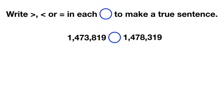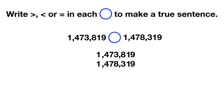This time, instead of using a place value chart, we'll just line the numbers up on our own. We could write out our first number, and then our second number right below it. Whenever you compare numbers, it's important to make sure the ones place is lined up. Now that we have our numbers lined up, we can start comparing. Which two digits should we compare first? When we compare, we start with the largest place value, so we'll compare these ones. We can see that they're the same, so we'll cross them out and move over.